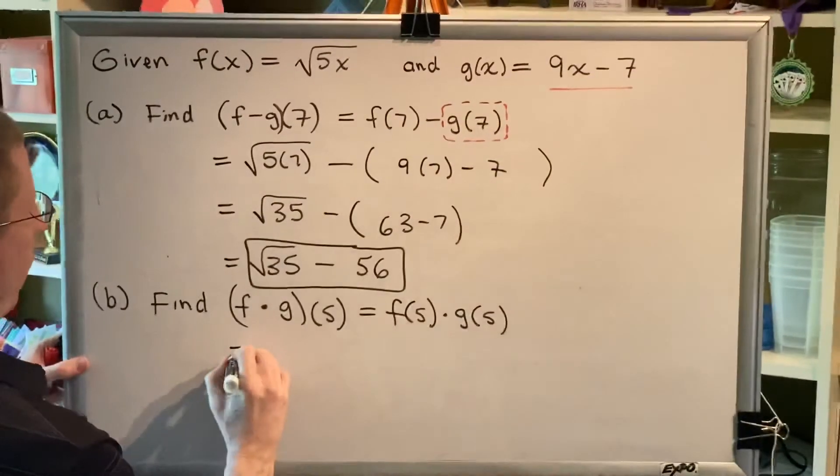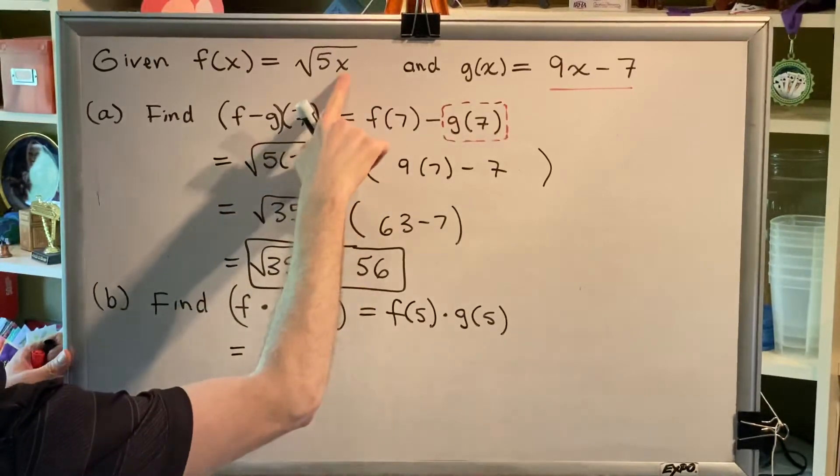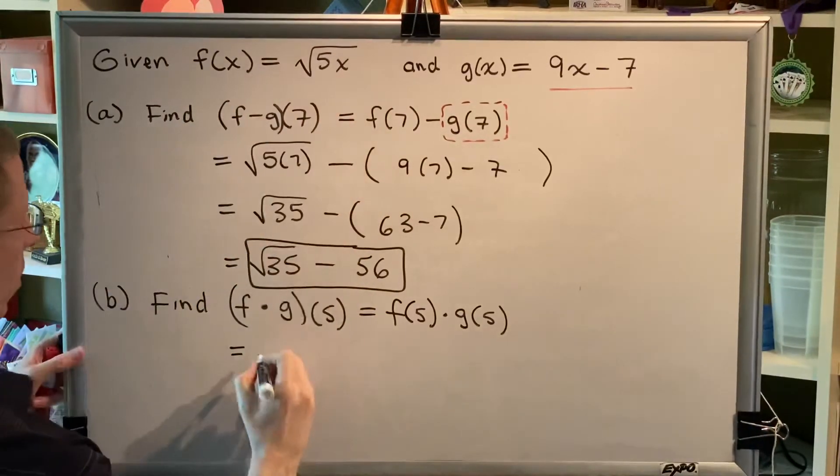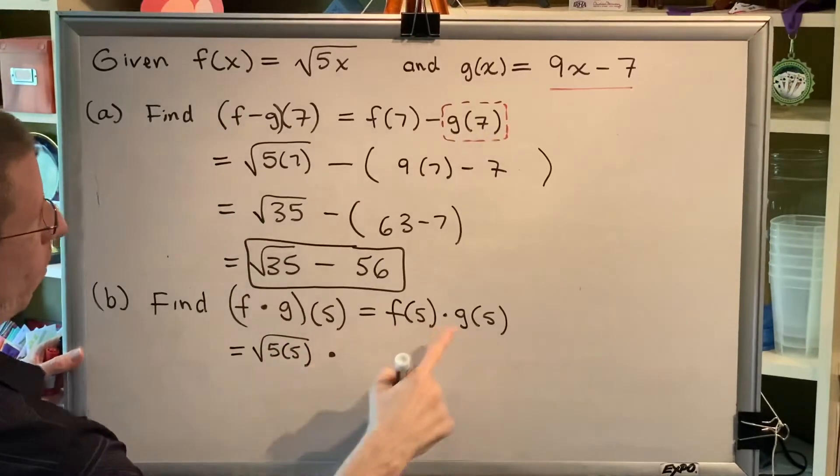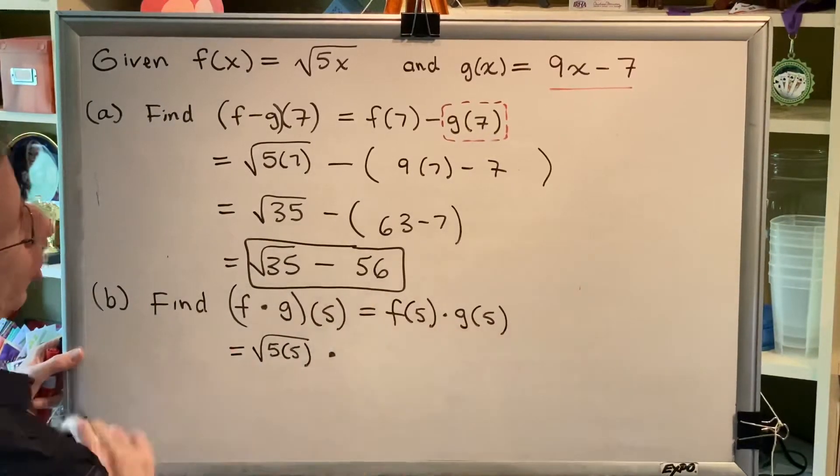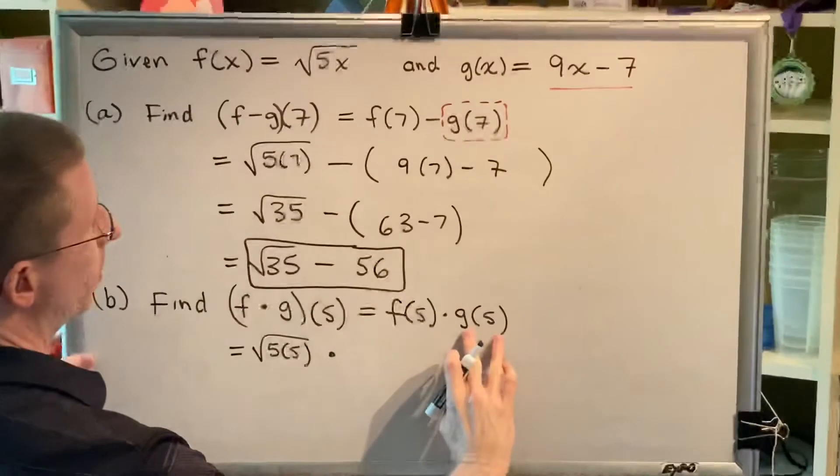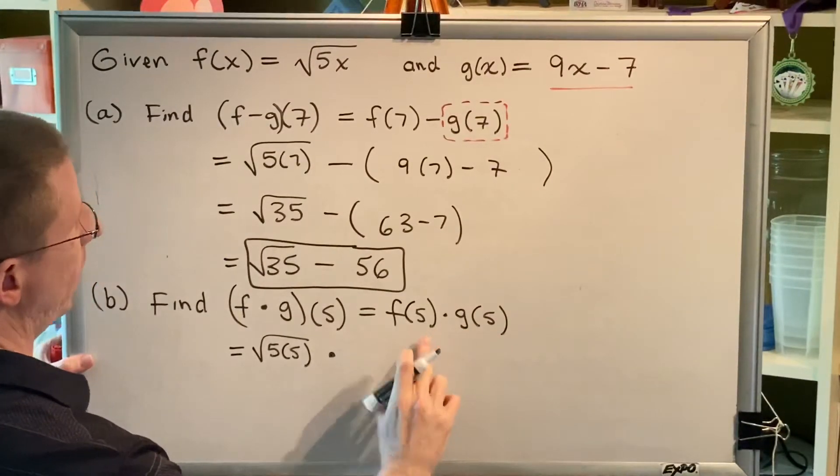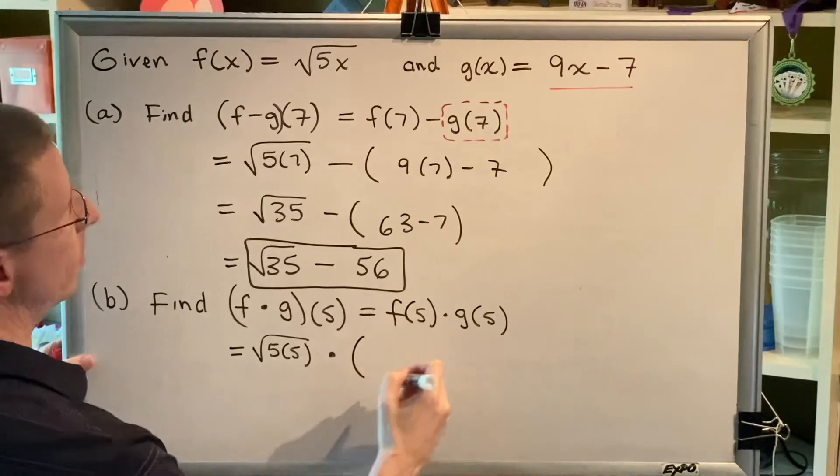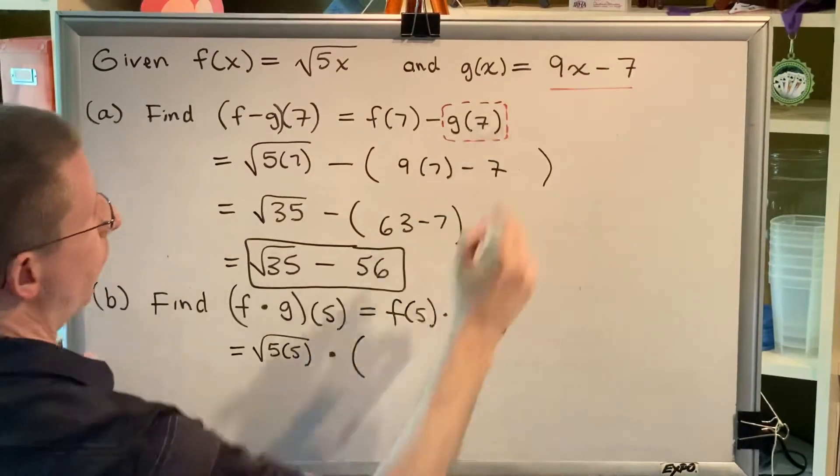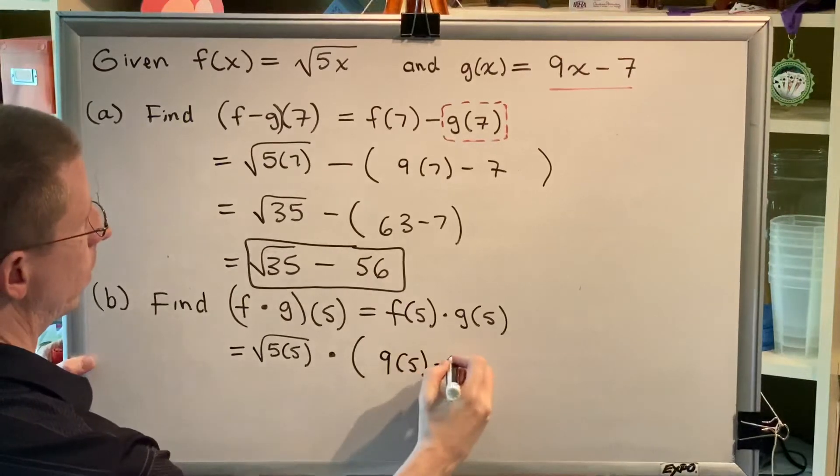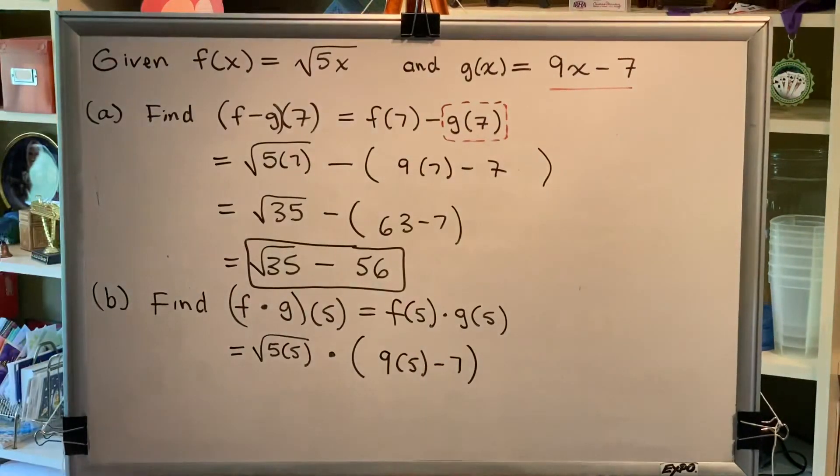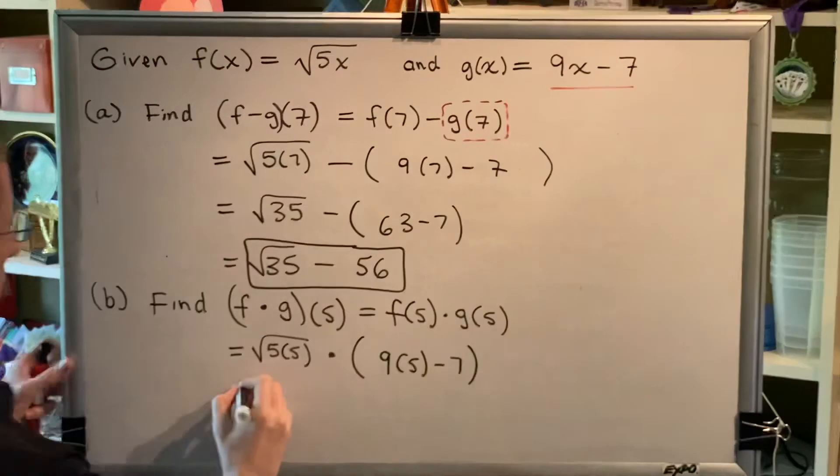First, f(5). That means I'm going to put a 5 in for the x in the f function. So, that's the square root of 5 times 5, multiplication dot, and then g(5). I'm replacing this with something new, and it has a multiplying neighbor, so I'm going to put it in parentheses, and this 5 is going to go in for the x in that function.